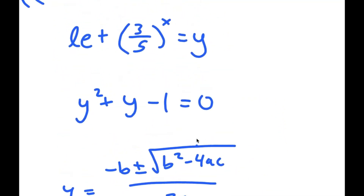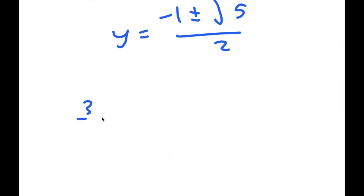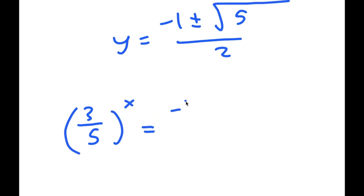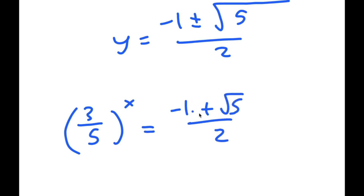This means 3 over 5 to the power of x is equal to negative 1 plus the square root of 5, over 2. The reason why negative 1 minus the square root of 5, over 2 doesn't work is because that's negative, and you can't take the power of a positive number and make it equal a negative.